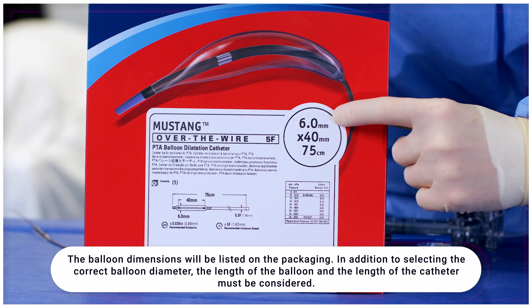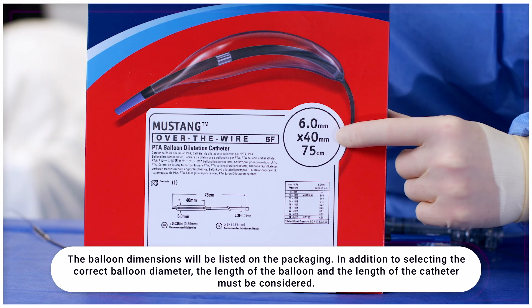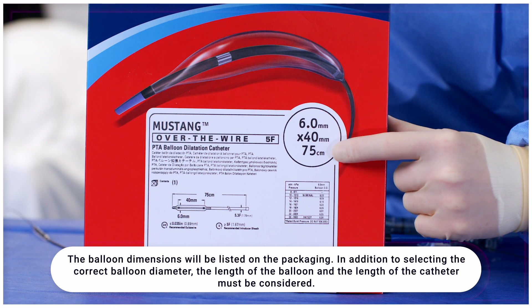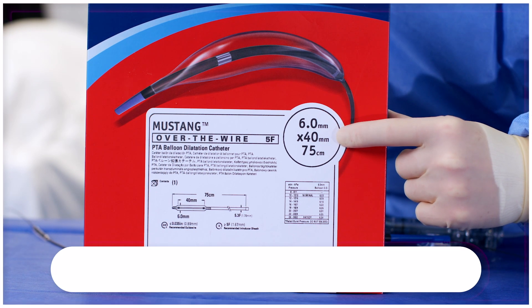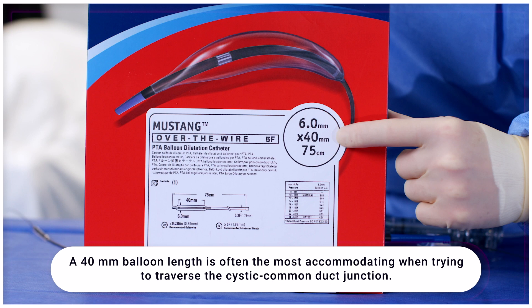The balloon dimensions will be listed on the package. In addition to selecting the correct balloon diameter, the length of the balloon and the length of the catheter must be considered. We typically use a 40 millimeter balloon length as it's often the most accommodating when we're trying to traverse the cystic common duct junction.